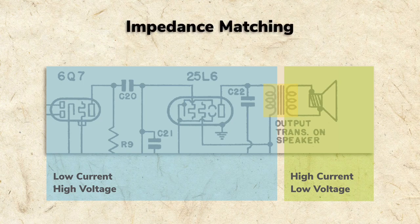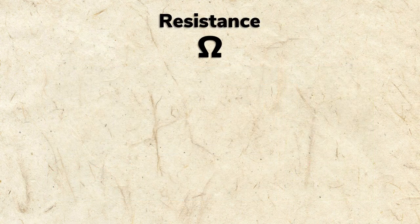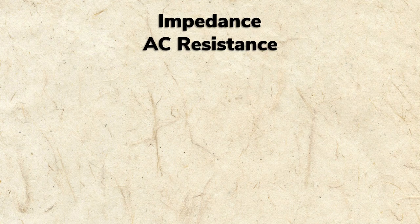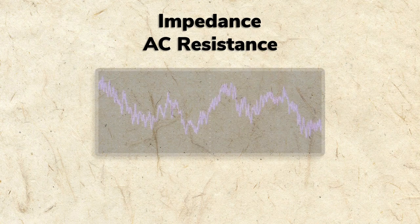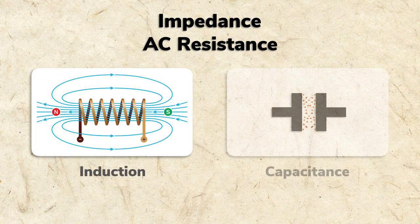This process is called impedance matching, because the tube circuit is high impedance and the speaker is low impedance. Like resistance, impedance is measured in ohms, but takes into account the added resistance that an AC signal, like an audio signal, faces due to induction or capacitance.